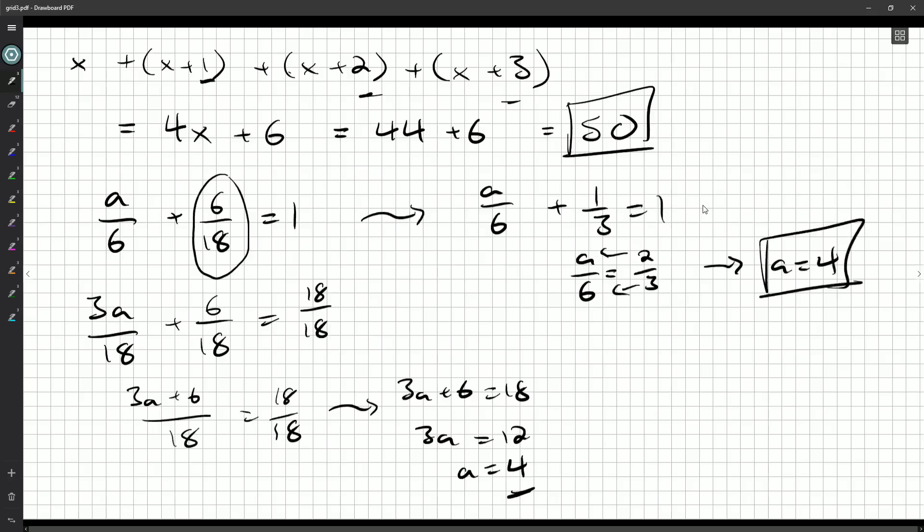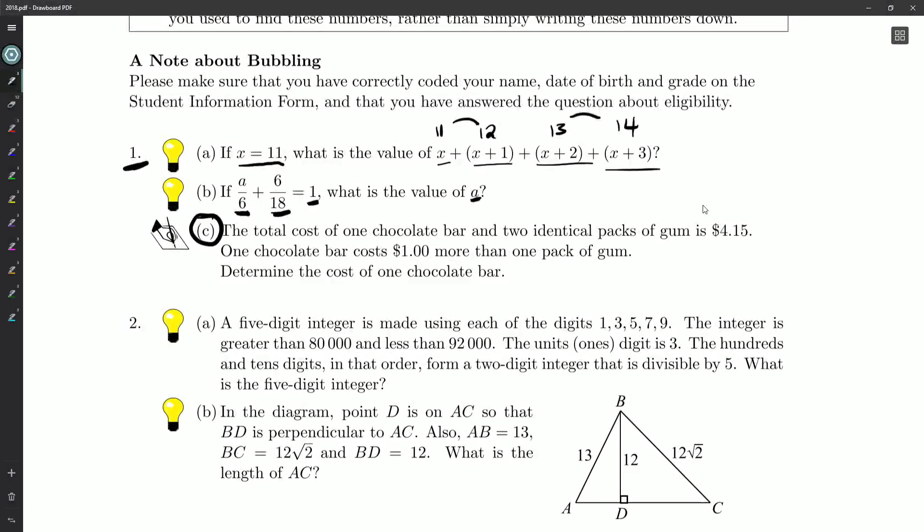Either way, it's a light bulb question, so we just need that final answer of 4. Okay, so 1c: now we actually have to write things up. The total cost of one chocolate bar and two identical packs of gum is $4.15. One chocolate bar costs one dollar more than one pack of gum. Determine the cost of one chocolate bar.